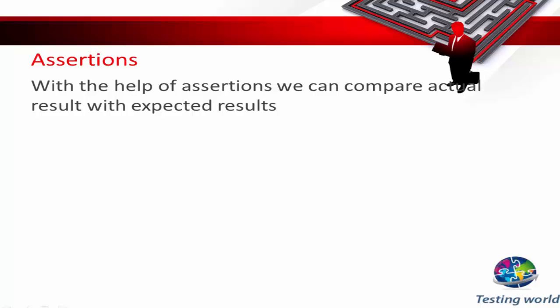Welcome to the testing world. Now we are going to understand assertions. When we are doing manual testing, in each test case we are comparing actual result with expected result, and on that basis we can say a test case is passed or failed. In the same way, when we are working on automation or Selenium, we need to compare actual result with expected result. Here we are going to use assertions — with their help we can compare actual with expected and accordingly pass or fail test cases.